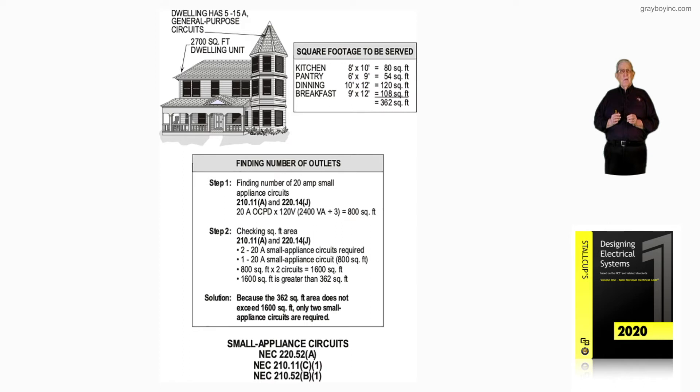In step one, in the boxed-in information, we enforce 210.11a and 220.14j. The 20-amp overcurrent device, times 120 volt,